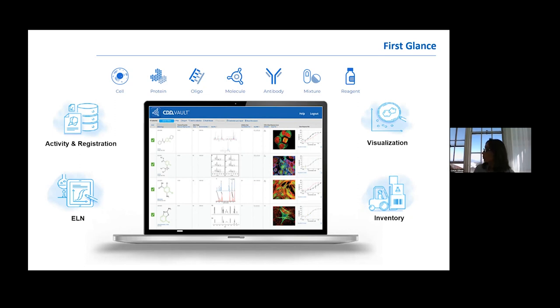If you look at first glance, the Vault consists of four modules. We call it activity registration, visualization, inventory, and ELN, and of course API, which I will cover later.